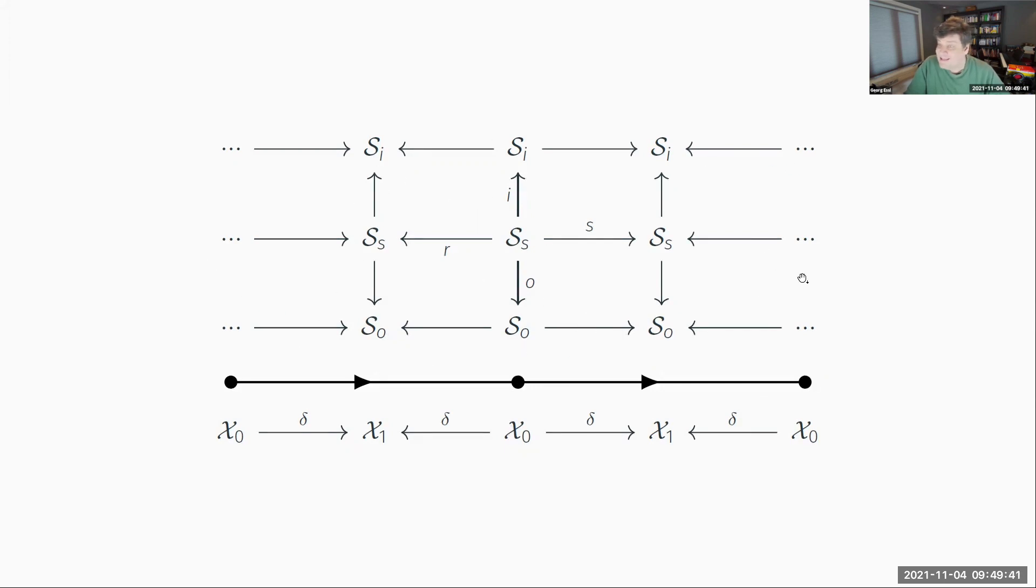But this is still very abstract. We have not at all said what we mean by this sheaf data here. We have not specified any of these maps. This is actually general. You can do a lot of crazy different things with this. But just to illustrate how this works, I'm going to give one example.